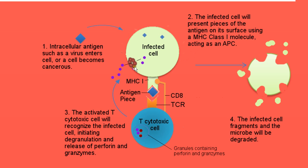Granzymes are degradation enzymes which break down antigen pieces and cellular debris. The release of perforin and granzymes initiates cell death in the infected cell. This death is a controlled death, so it doesn't lead to infection of the surrounding cells.